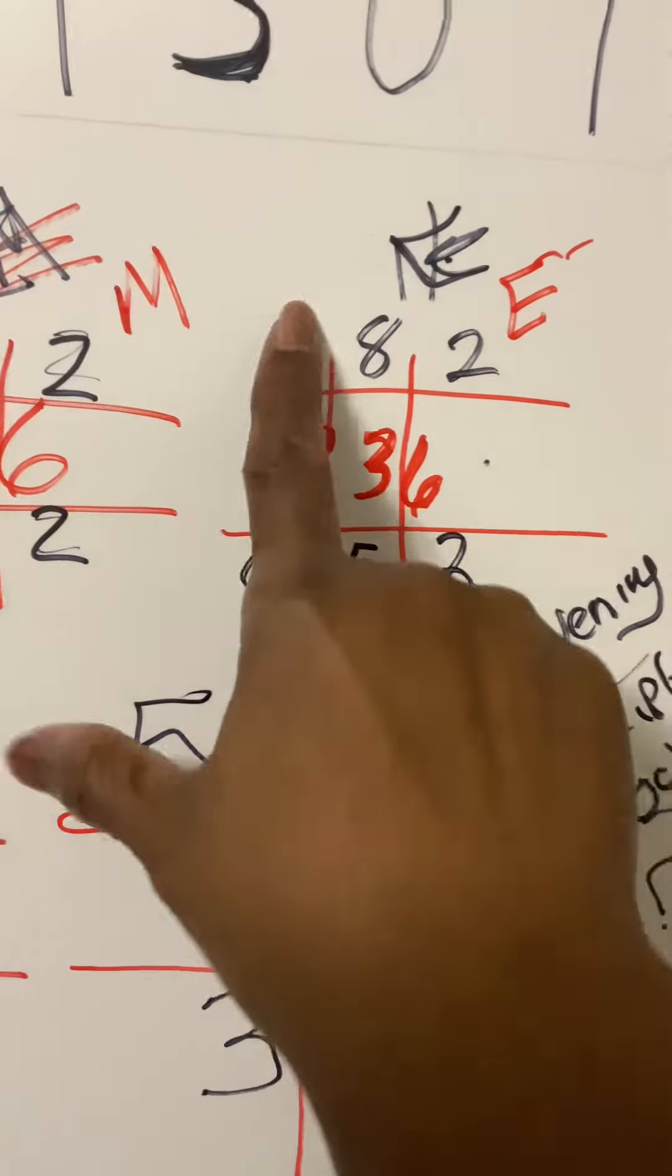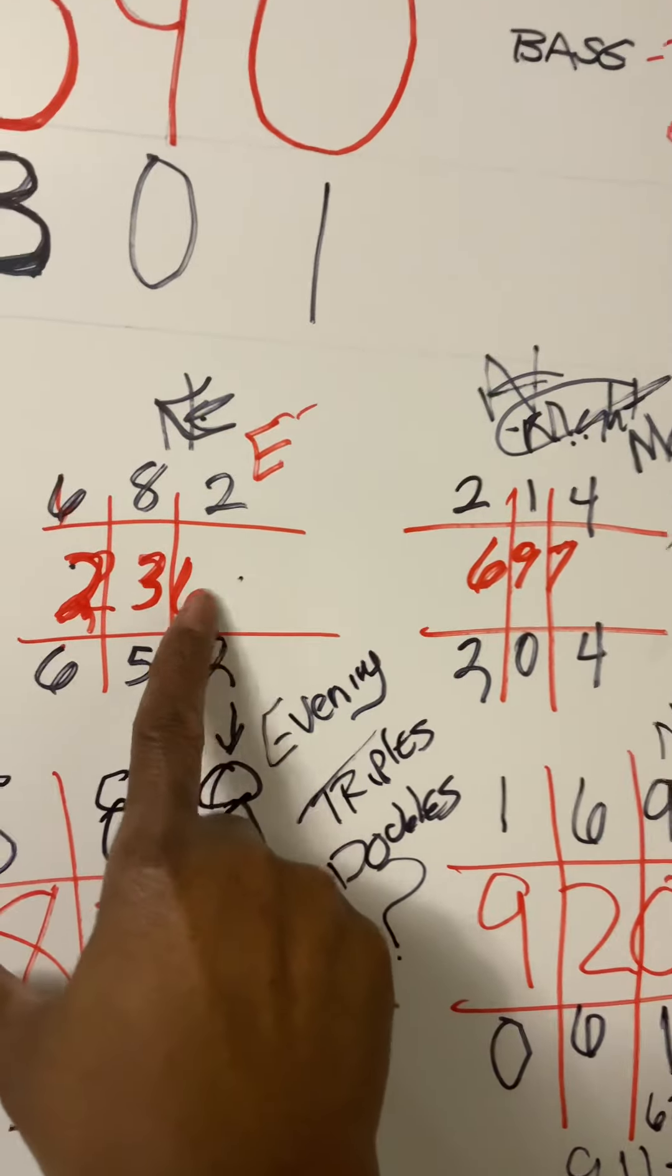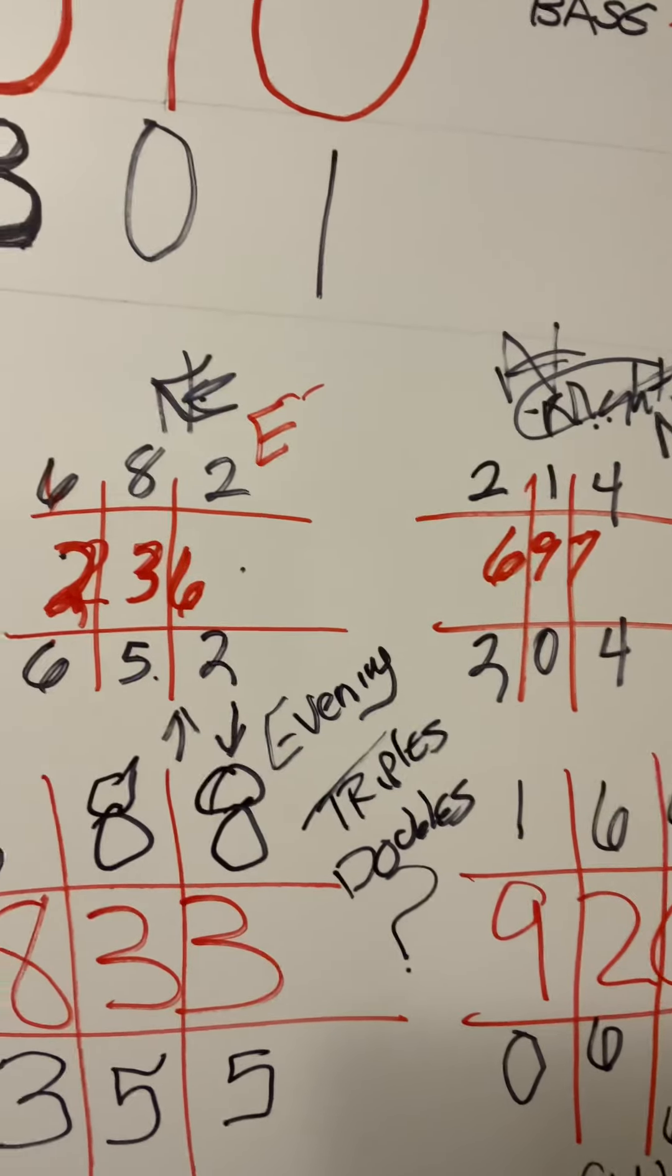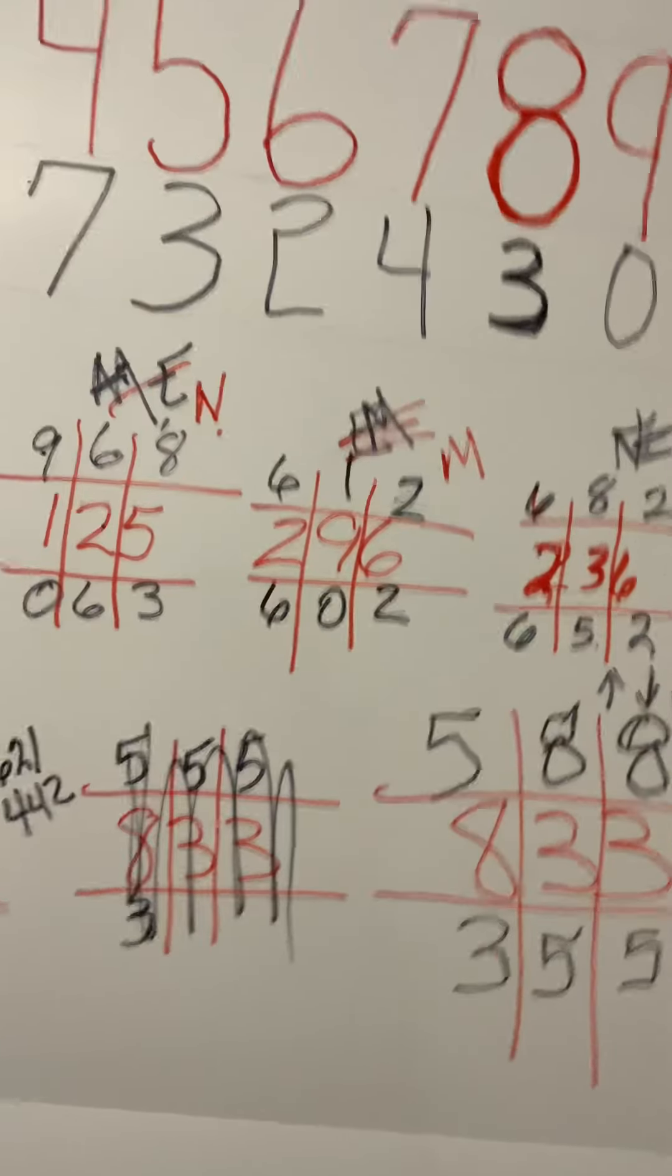697 did come from over here because you got all of this, so you can add one. So I would have said 69, and that's 697. I don't know, you just have to know the numbers, just like the 236.